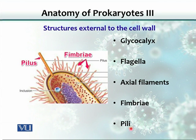Fimbriae and pili are small hair-like projections. Fimbriae are these tiny hair-like projections all over the cell. Pili could be one, two, or many — up to ten. These are used for DNA transfer from one bacterium to another.